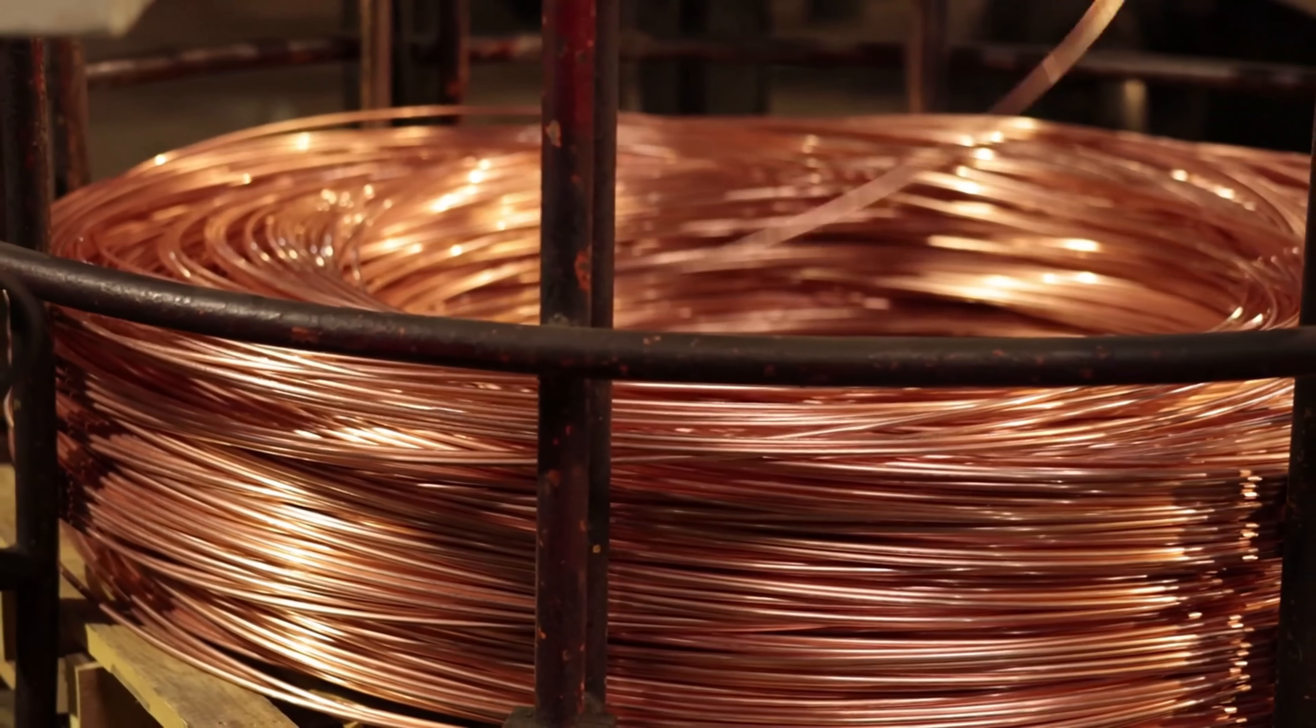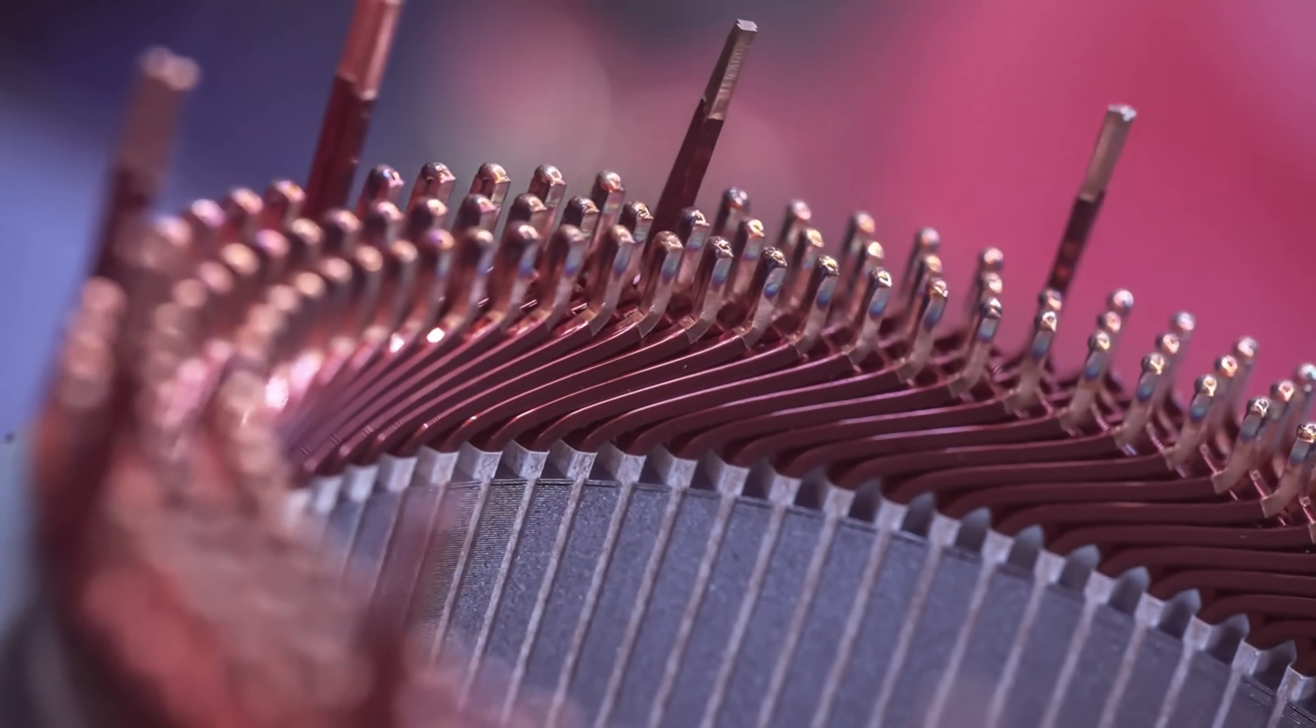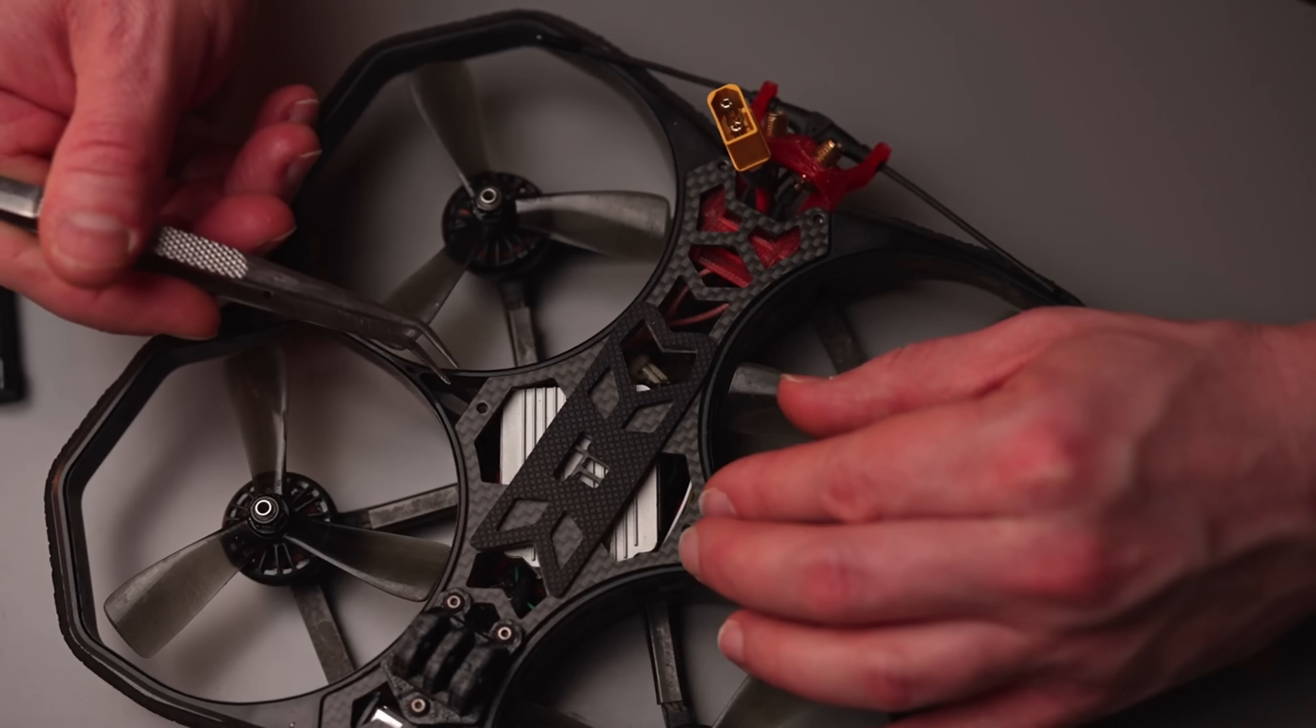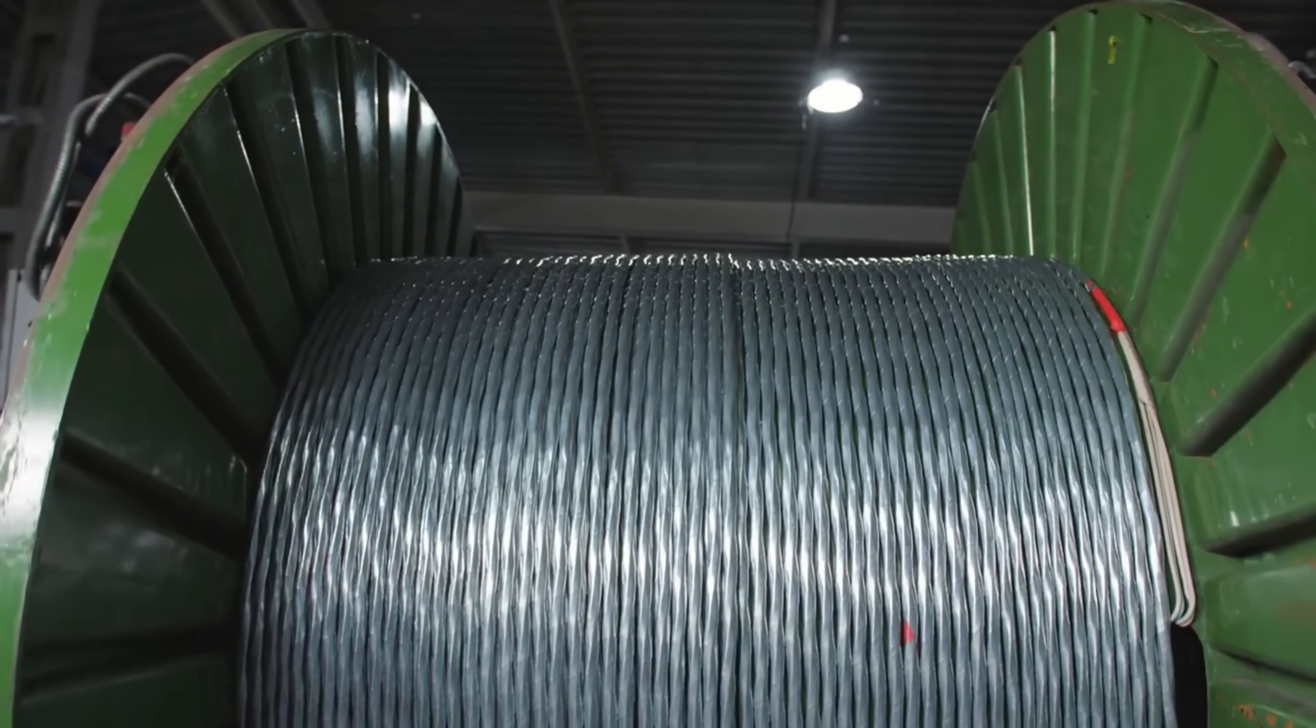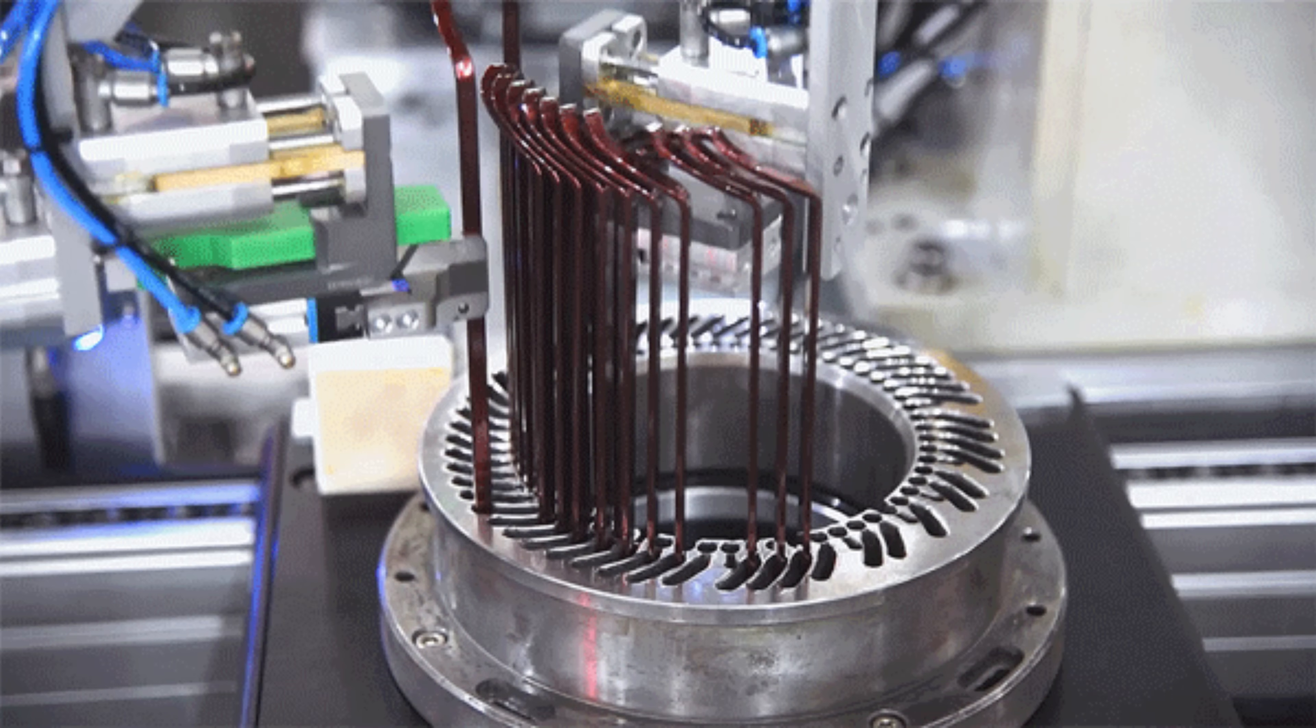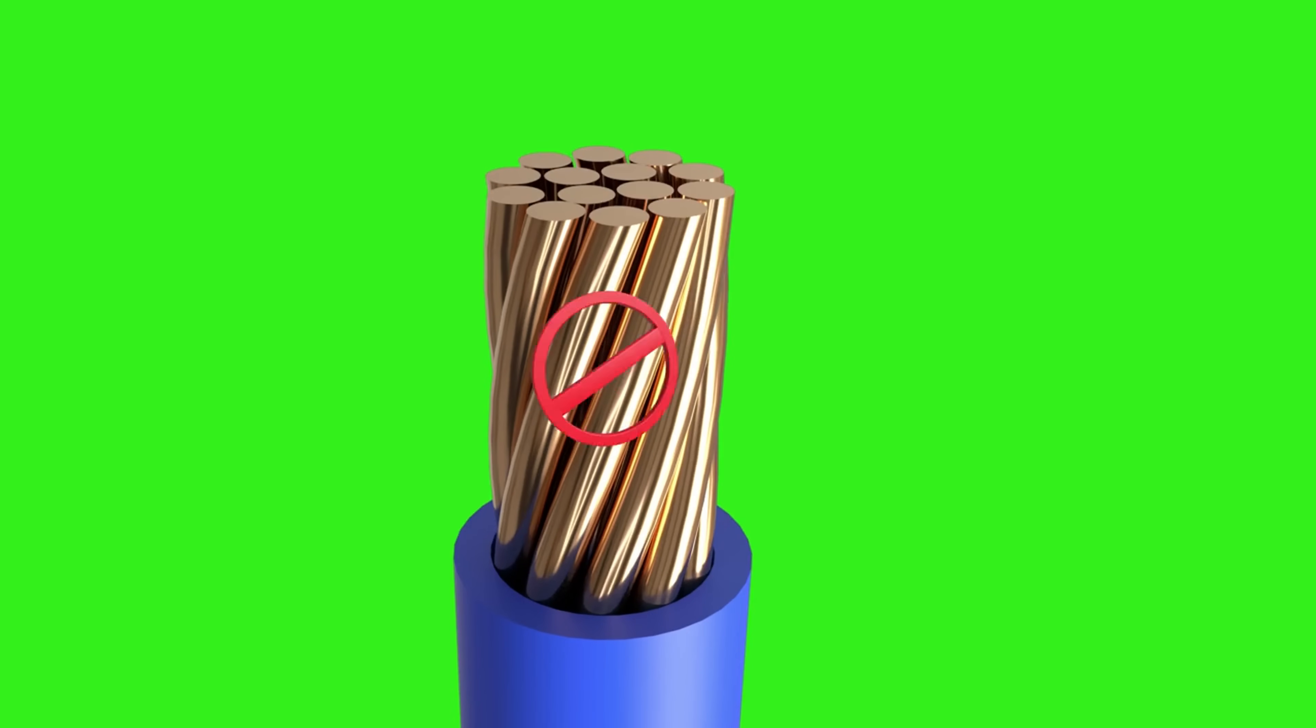But there's a problem. Copper is heavy. It's expensive. And in many modern applications, like electric aircraft, wearable devices, or drones, every extra gram slows you down and drains your battery. Even aluminum, which is lighter, still adds significant weight and doesn't offer the same conductivity. We've reached a point where traditional metals are limiting the potential of next-gen electric systems. The world needs an alternative.